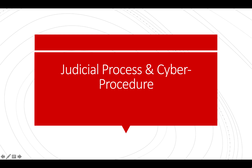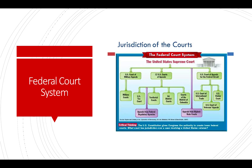In this chapter we're going to cover both the federal and the state judicial process. The federal court system looks like this. Down at the bottom are courts of general jurisdiction — the U.S. Tax Court, the territorial courts, the 94 District Courts, and the Court of the District of Columbia — these are courts where federal cases will originally be brought.